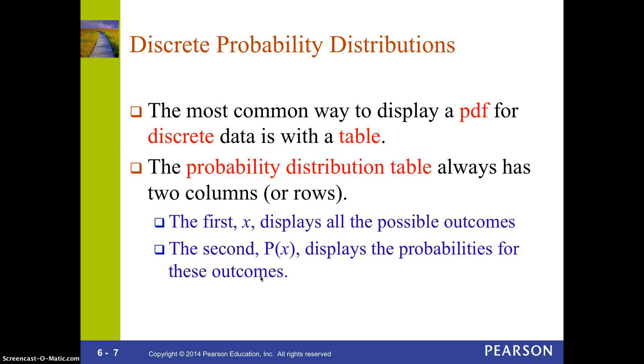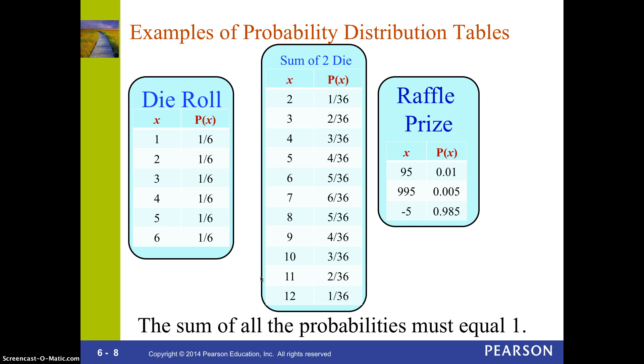First, let's look at discrete probability distributions. A lot of times we're going to call these PDFs, and that stands for probability distribution function, not the type of file that you have on your computer. You can display them either with a table or with a graph. First, we'll talk about displaying them with a table. You have either two rows or you can actually write it as two columns. The examples I have are with two columns. The first displays all the possible outcomes. The second displays the probabilities for these outcomes.